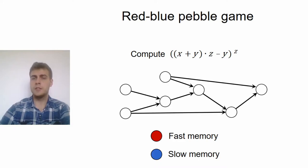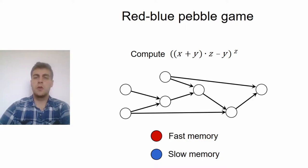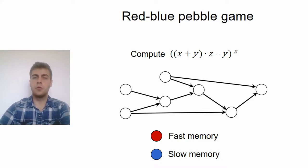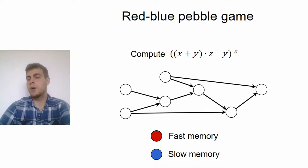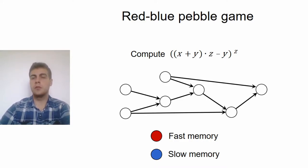So you have two kinds of pebbles. Red pebbles correspond to a faster memory, for example, cache, whereas blue pebbles correspond to slow memory, for example, RAM, and you mark these nodes according to where the corresponding values are saved.